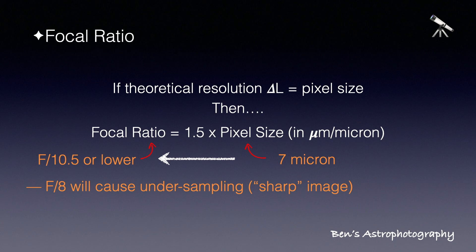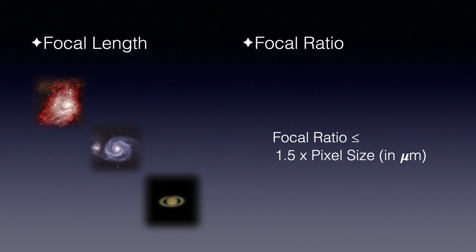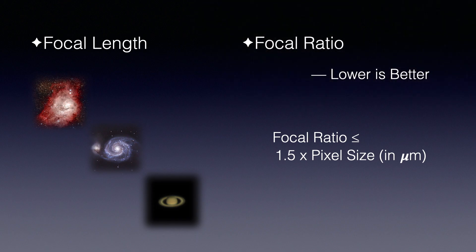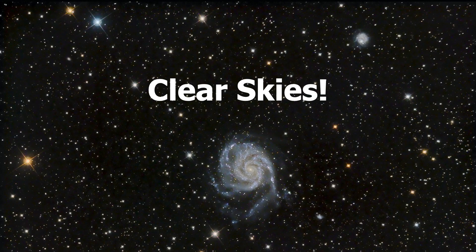All right, let's do a quick wrap-up. Choosing a telescope is like choosing a house — lots of things to consider. We discussed focal length and focal ratio today. Focal length decides which type of objects we can shoot; I put them in three big categories: nebulae, galaxies, and planets. Focal ratio decides how much light we can collect on our sensors — a telescope with lower focal ratio is definitely better. At the same time, we need to be careful with the relation between focal ratio and our camera's pixel size to avoid oversampling or soft images. That's it for today. I'll see you soon on the second part of Choosing Telescopes for Astrophotography. Thanks for watching. Take care and clear skies.